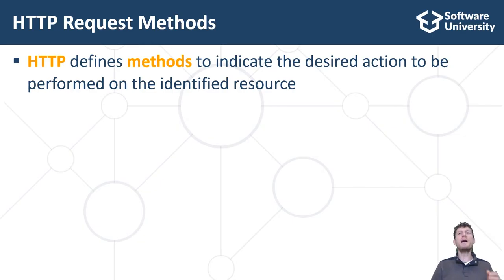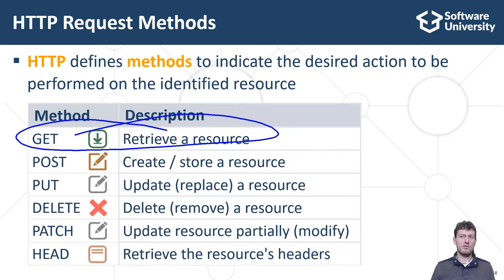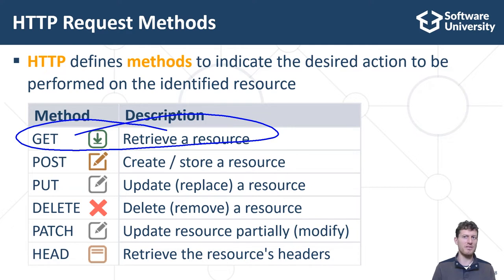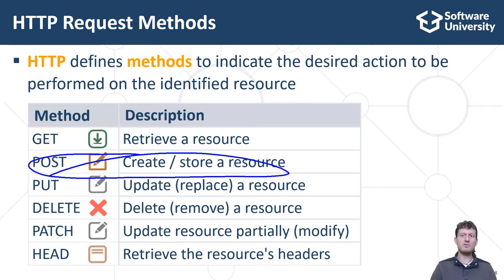HTTP defines methods to indicate the desired action to be performed on the identified resource. The most often used HTTP methods are GET, POST, PUT, DELETE and PATCH. The GET method retrieves a specified resource. It is used to download a web page, CSS file, script, document or other resource from a website. For example, if you open your favorite news site, its content will be downloaded using HTTP GET requests. GET can retrieve a list of resources, for example all the news from the front page, or a single resource such as a single news article.